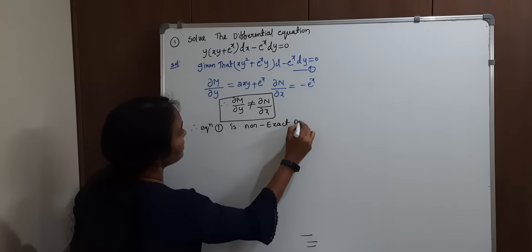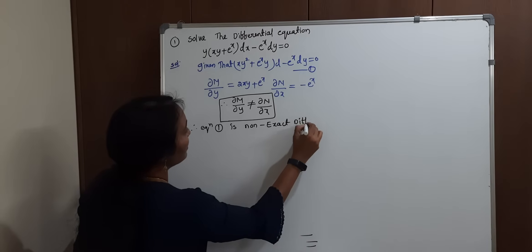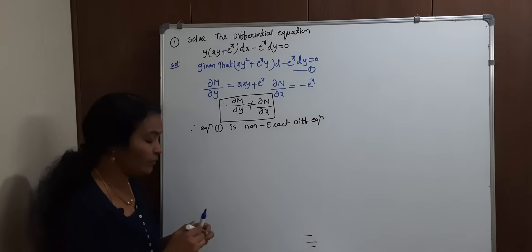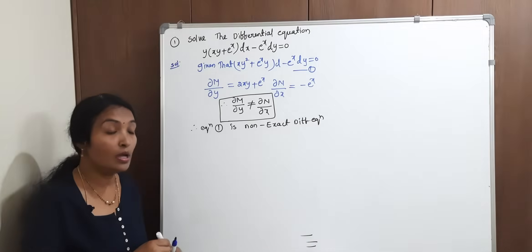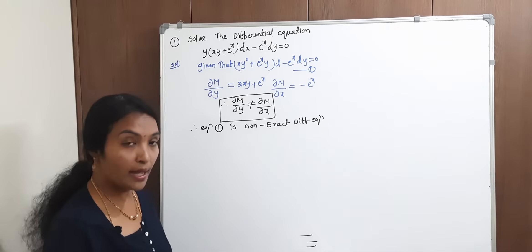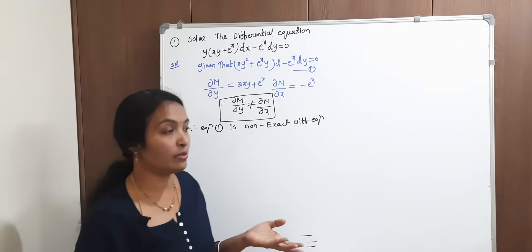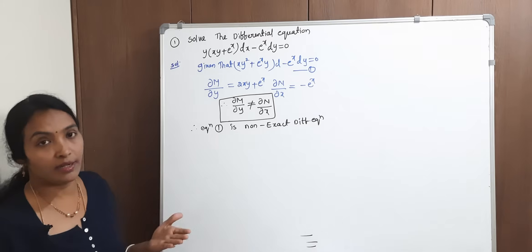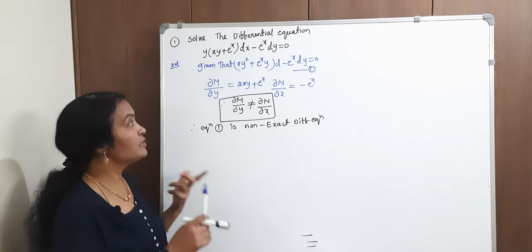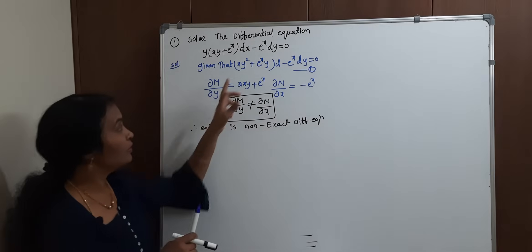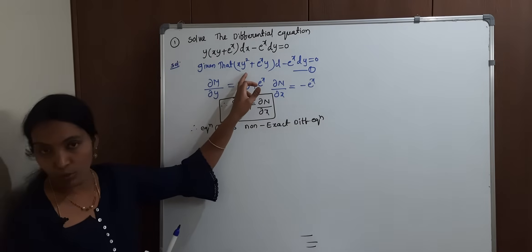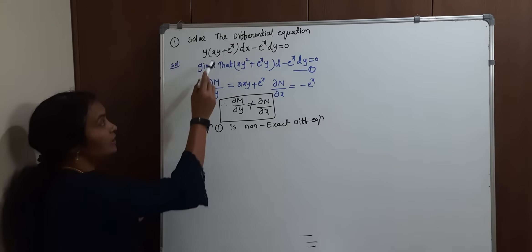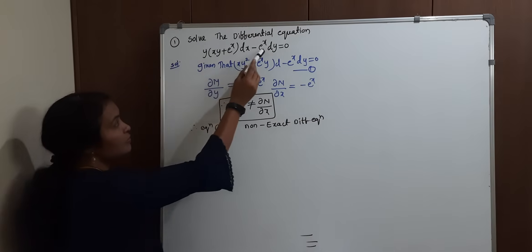Since it is non-exact, what we have to do? We need to apply the inspection method, or we need to find an integrating factor. Is inspection possible? No, there is no way — this is not a direct principle.